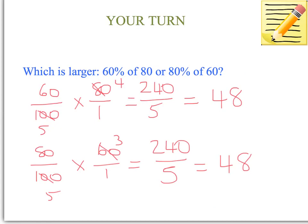Well, I know that I would like to have 80% of 60, because then I just take the 48 away from the 60, and I only have to pay $12. So that sounds pretty good to me.